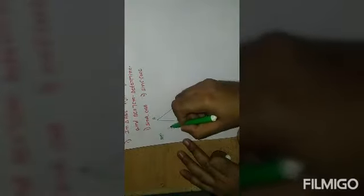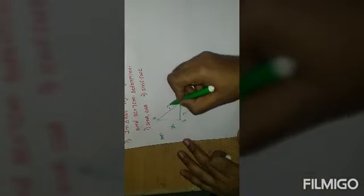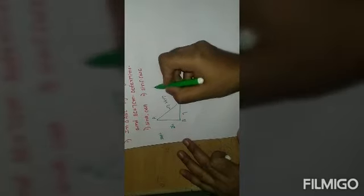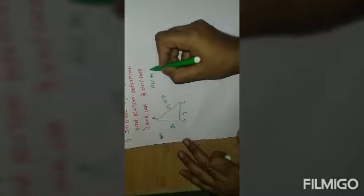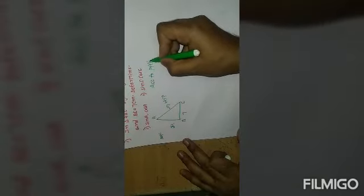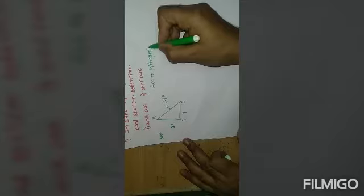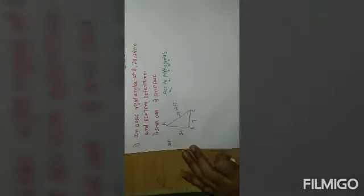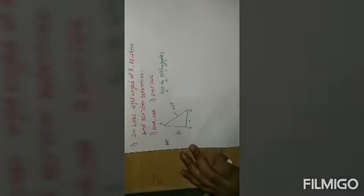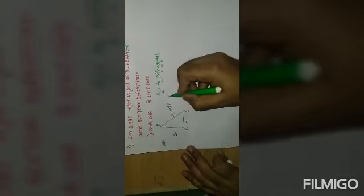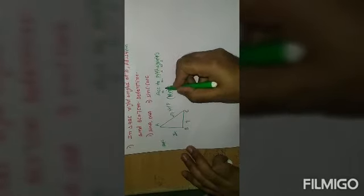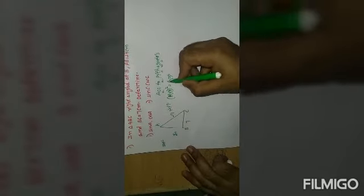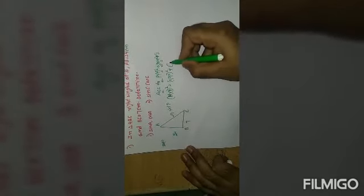Let us consider right angle triangle ABC where AB equals 24 centimeters and BC equals 7 centimeters. This side is the hypotenuse. According to Pythagoras theorem, hypotenuse square equals opposite square plus adjacent square.